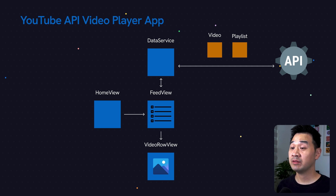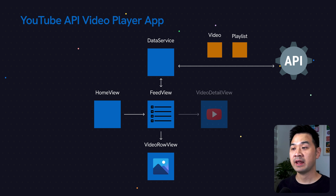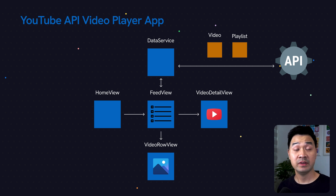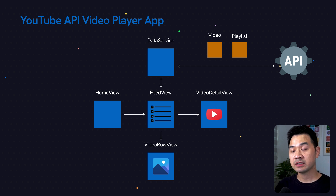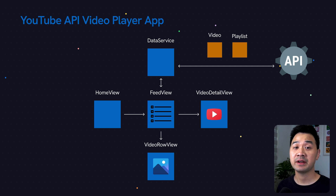We're going to use AsyncImage to asynchronously — that means in the background — download that image data for display. We're going to create a separate video row view as a reusable view, and the feed view, which has a list component, is just going to create as many instances of the video row view as needed. Each video row view will have the async image to download the thumbnail. We're also going to create a video detail view that will slide up as a sheet from the feed view when the user taps on one of those video row views. Inside the video detail view, we'll show the video player at the top and the video description below it.